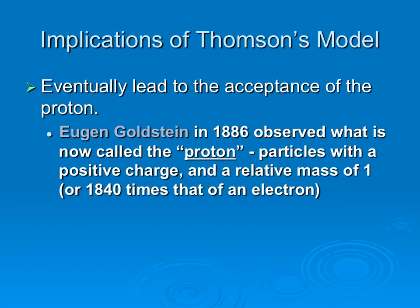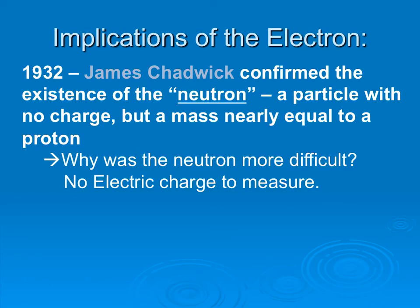Thompson's model did some interesting things for our future understanding of the atom. It led to the acceptance of the proton, which had been observed in 1886 — about 15 years before the electron. The neutron wasn't accepted until much later, in 1932, because since the neutron is neutral and has no electric charge, that made it much more difficult to measure. But knowing there was one smaller particle, the electron, made it easier for people to accept that there were others.